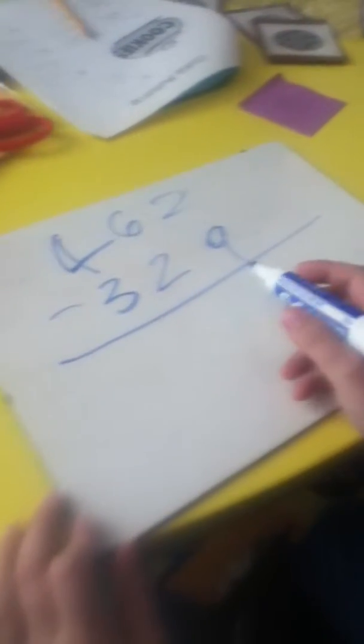462 minus 329. Okay, you can't do 2 minus 9, so you x out this, make it a 12.